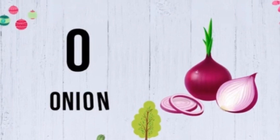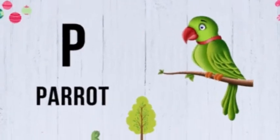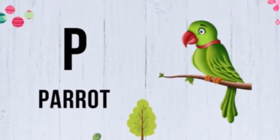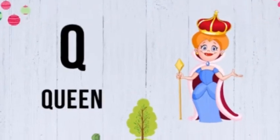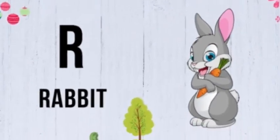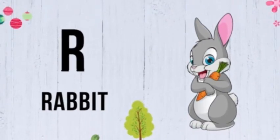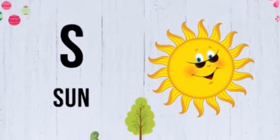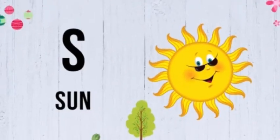N for net, O for onion, P for parrot, Q for queen, R for rabbit, S for sun.